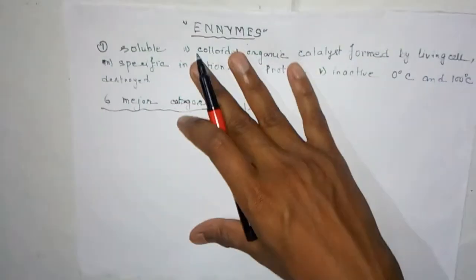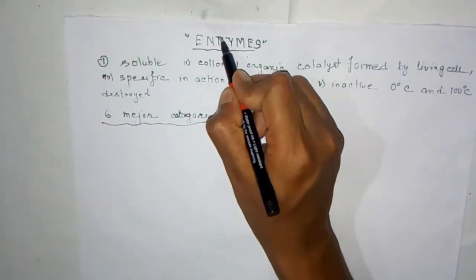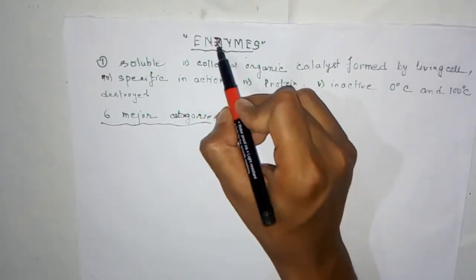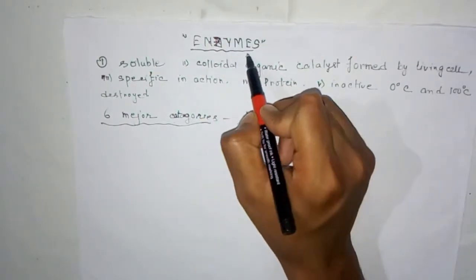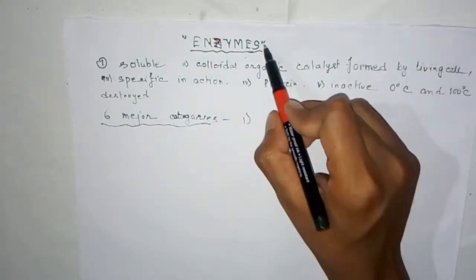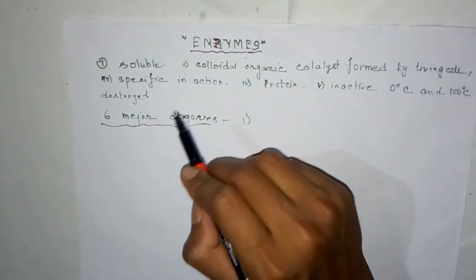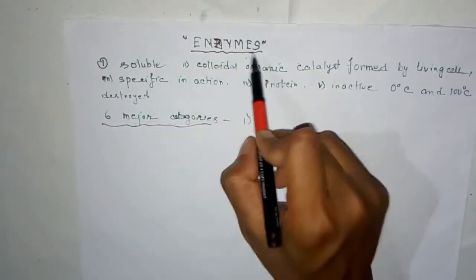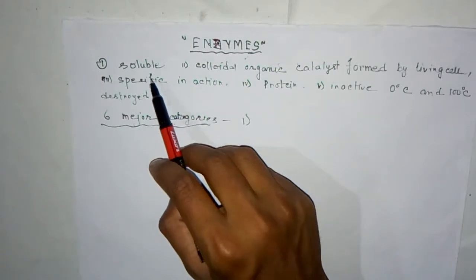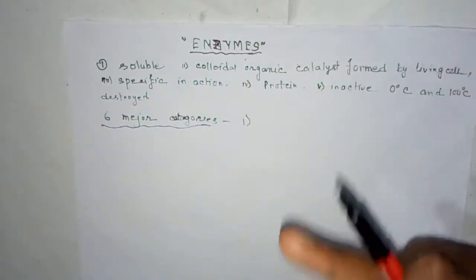Hello friends, hope you all doing well. So today here in this video we'll discuss about enzymes. The characteristics of enzymes: number one, they are soluble and they are colloidal organic catalysts.